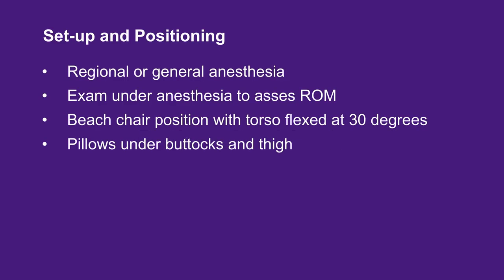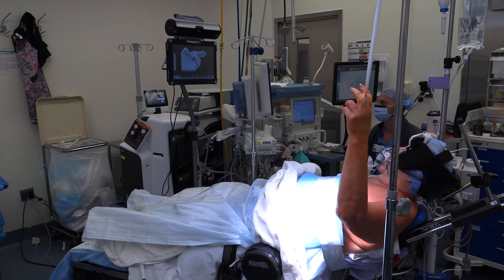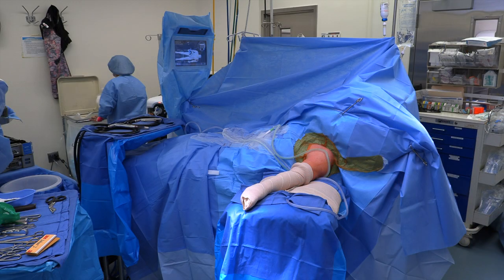The patient is taken to the operating room where, after administration of either regional or general anesthesia, an evaluation under anesthesia of the shoulder is performed to assess passive range of motion. The operating table is placed in the beach chair position with the torso forward flexed at 30 degrees, and pillows are placed under the patient's buttock and thighs. The 3D navigation system is installed and the shoulder and upper extremity is prepped and draped in a standard sterile manner.